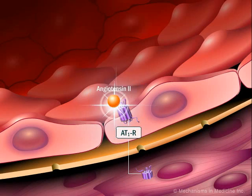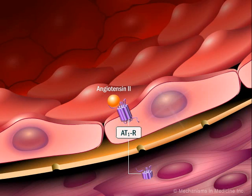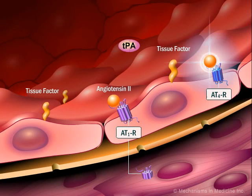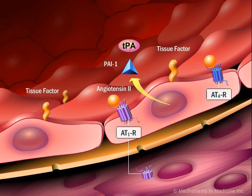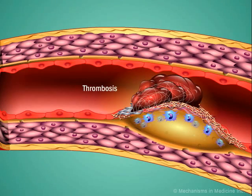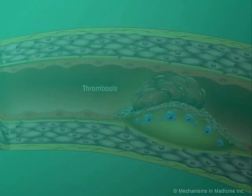Angiotensin II enhances thrombosis by stimulating the endothelium to express tissue factor and synthesis of PAI-1, the natural inhibitor of TPA. Thrombus formation may result.